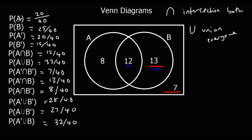So to summarise: P(A) is just everyone who likes A. Not A is everyone outside of A. Whenever we've got an intersection symbol, it's got to be both of those two things — both A and B. When we've got a union, it can be either just A, or just B, or both of them — everything that's A and everything that's B all added up together.